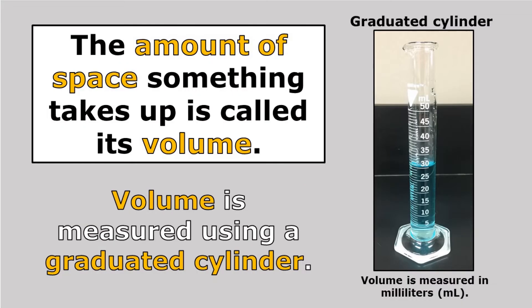The amount of space something takes up is called its volume. And volume is measured using a graduated cylinder. It's basically just an empty tube with lines on it. So when I pour something in like this blue liquid, I can see how much space it takes up. And volume is measured in milliliters, so each line on this graduated cylinder represents one milliliter.